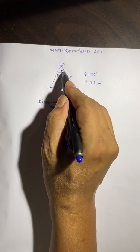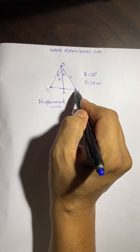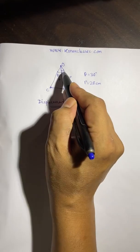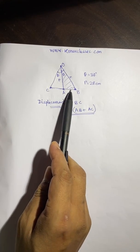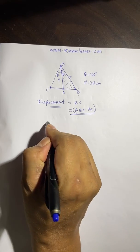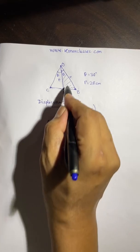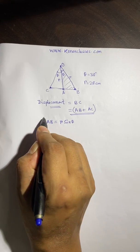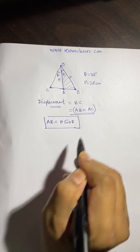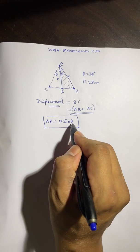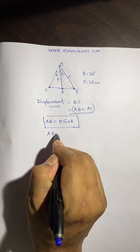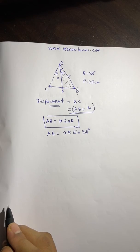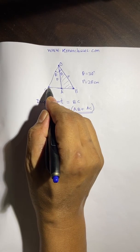Consider the triangle made by the pendulum when it goes to one extreme at point B. The angle is theta, and the opposite arm of theta is AB. From trigonometry, AB equals r·sin(theta). Since theta is 30° and r is 28 cm, AB = 28·sin(30°).